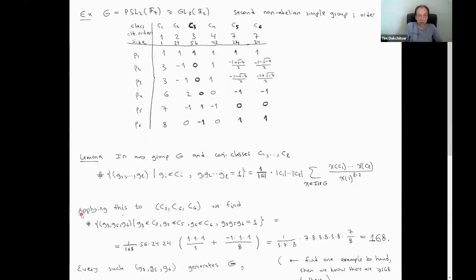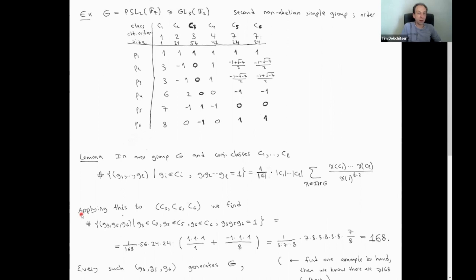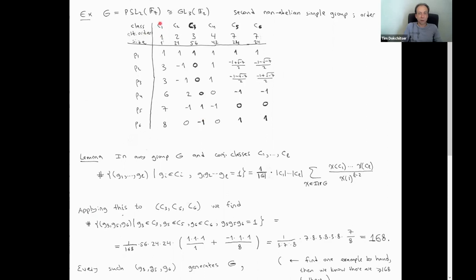PSL2(F7) ≅ GL3(F2) has order 168 and six conjugacy classes: elements of orders 1, 2, 3, 4, and two classes of elements of order 7. The character table has six irreducible characters. Looking at the table, four of these classes are rational (all character values are integers), while the two classes of order-7 elements are not rational — they are permuted by Galois (you can see this from the non-rational numbers in those columns).